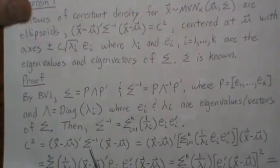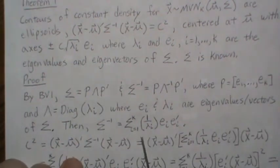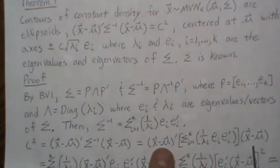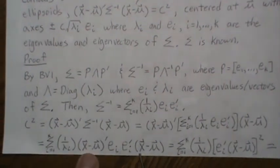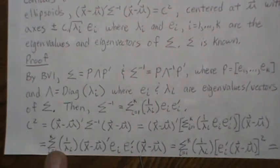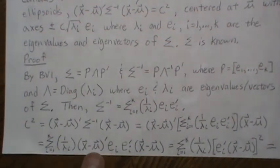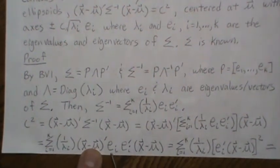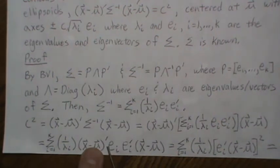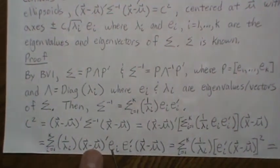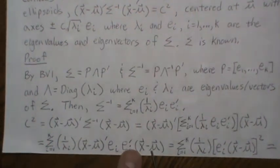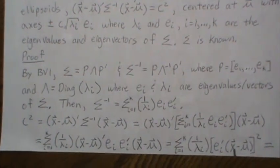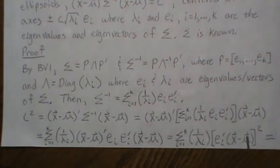For the constant density ellipsoid equal to C-squared, we substitute the expression for sigma-inverse. Bringing those eigenvectors inside, we note each factor is a scalar — a 1-by-k vector times a k-by-1 vector — so it's a constant. We can factor it out and take it squared, giving us a sum of squared terms.